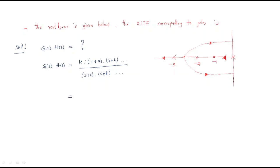The DC gain K is common for any open loop transfer function. Now we need to count how many zeros and how many poles we have. Observing the root locus diagram, there is a pole at the origin, and the root locus travels from the origin to minus one — so we have one zero at s = −1.